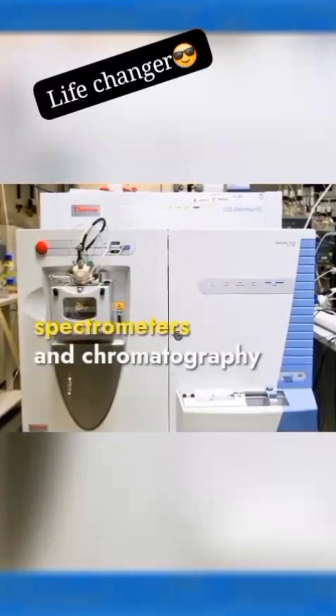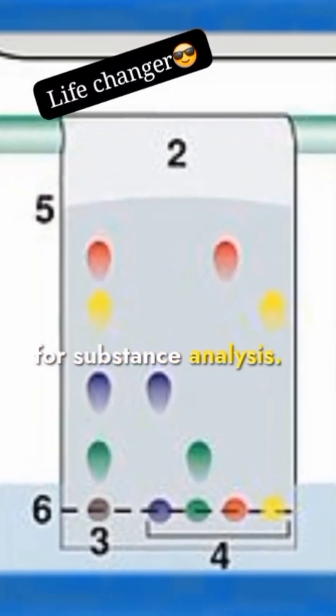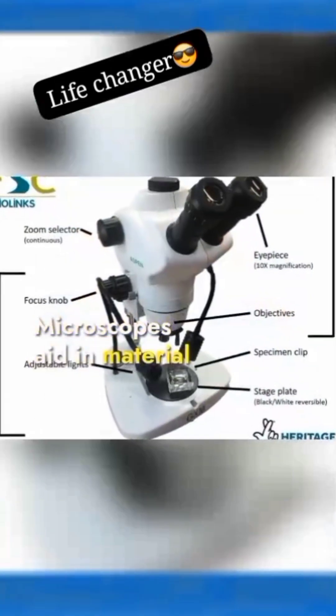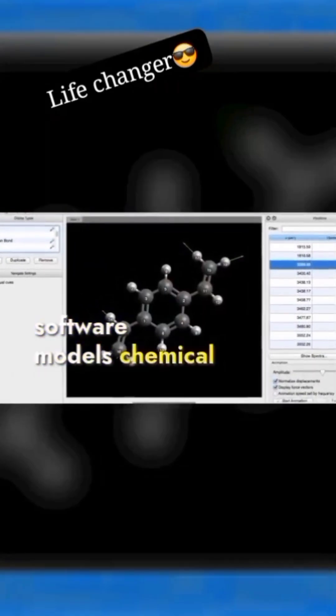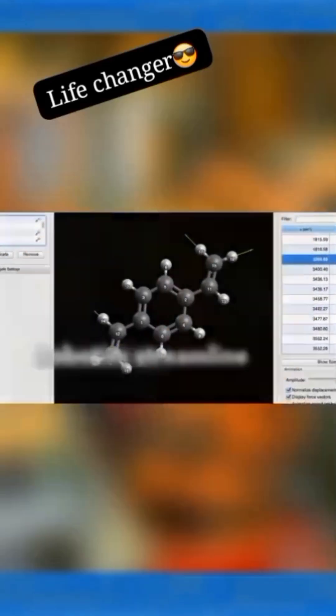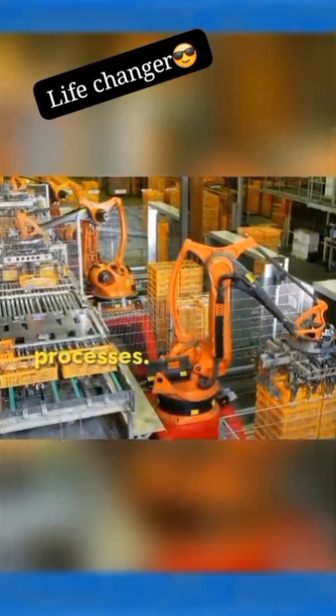Chemistry relies on spectrometers and chromatography for substance analysis. Microscopes aid in material examination, and computational chemistry software models chemical interactions. Robotics streamline high-throughput screening processes.